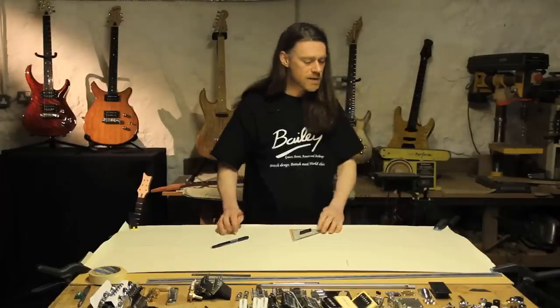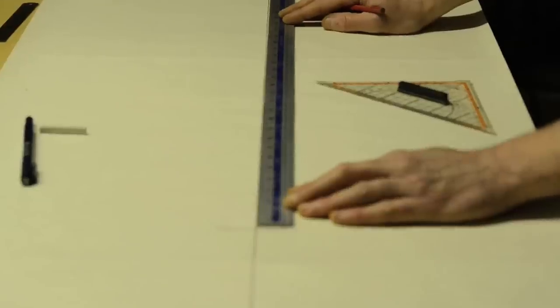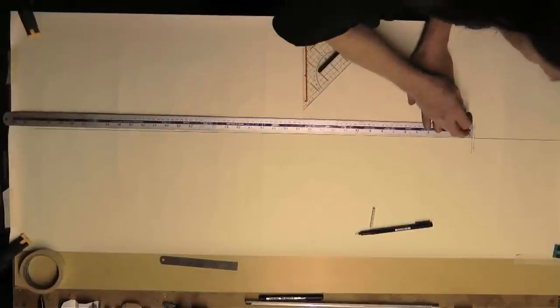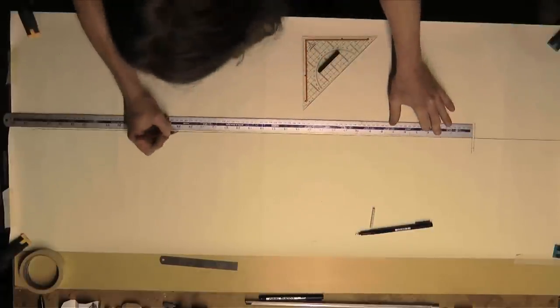The next mark we make is for the scale length. I've chosen a scale length of 25 inches. From the take-off side of the nut I'm going to mark 25 inches.